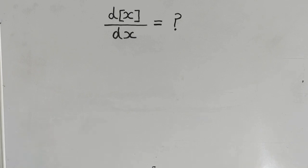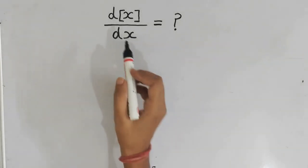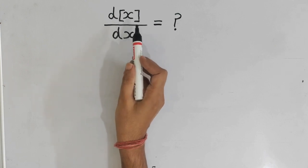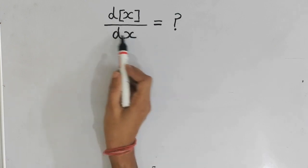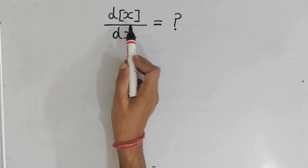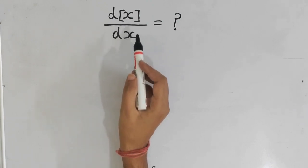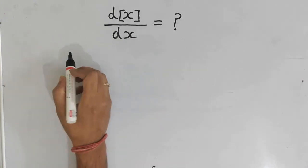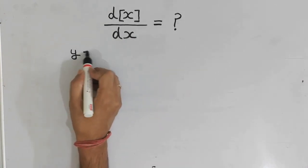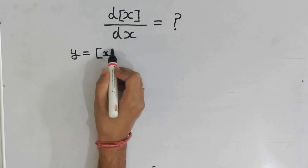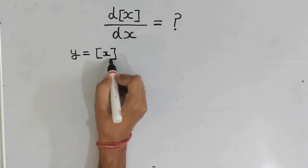Hi friends, today we will be finding the value of d greatest integer function of x upon dx — that is, the derivative of the greatest integer function. So firstly, let's take y equal to greatest integer function.